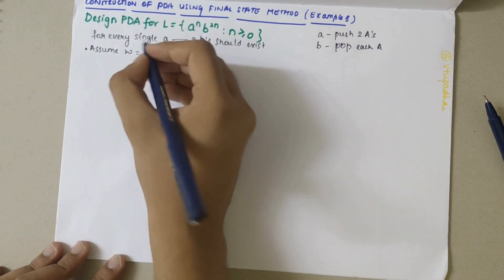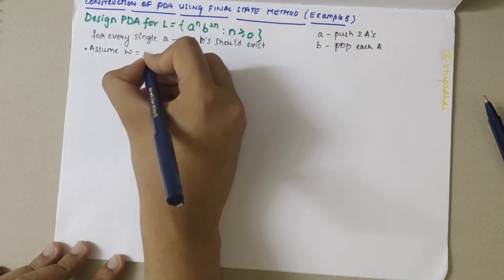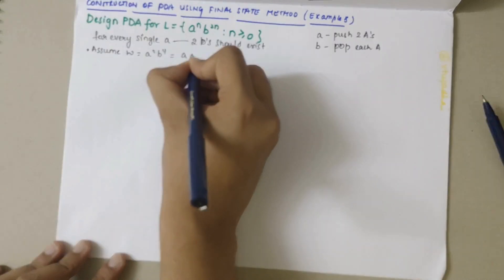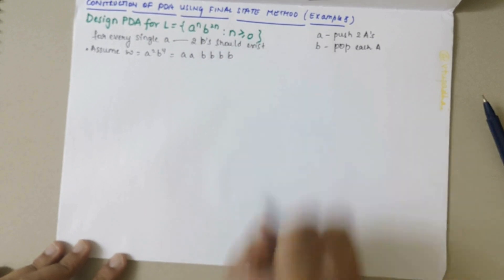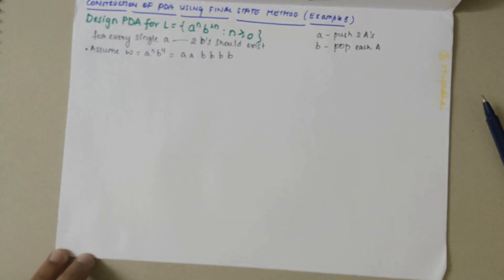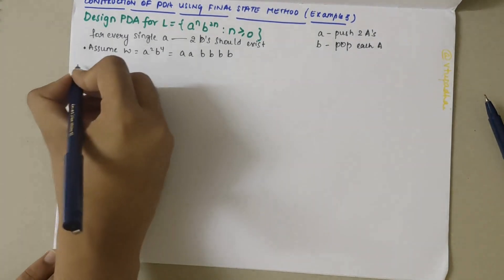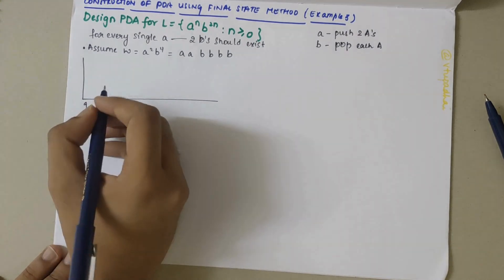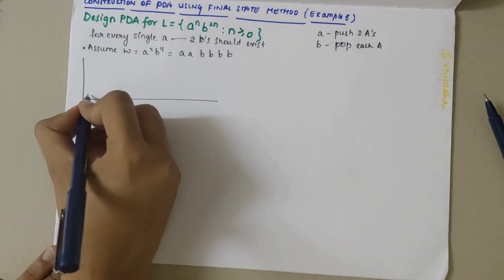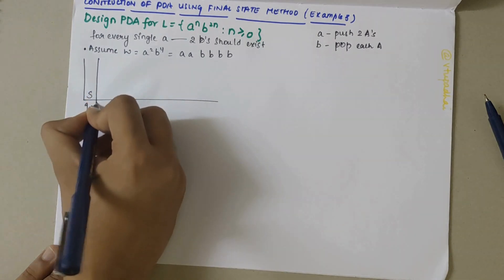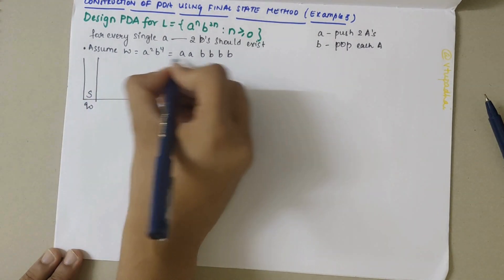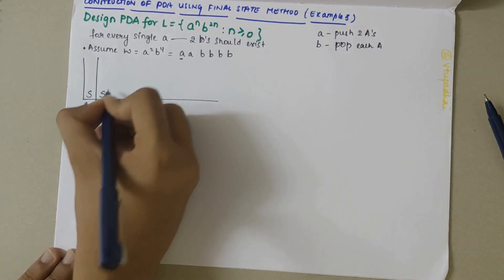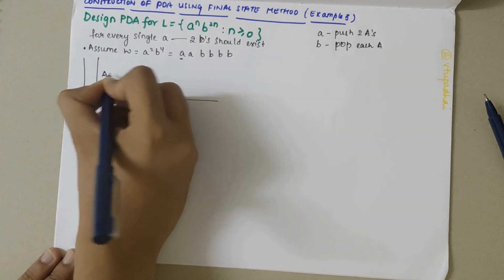Our first step is to assume a string which would obey this language condition. Let me take a²b⁴, so it would be 'a a b b b b'. For this language I'll construct a stack and trace through it. On Q0 the stack was empty, and when the input is 'a' I should push two capital A's.